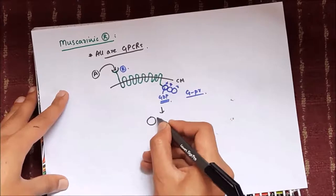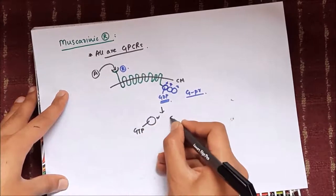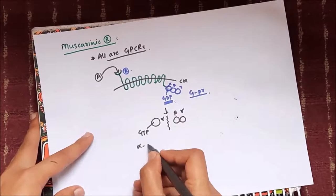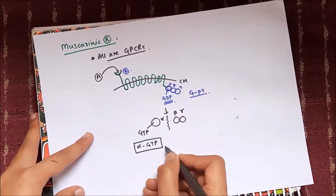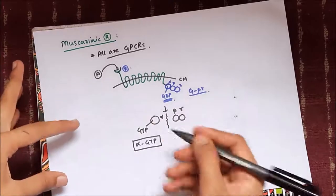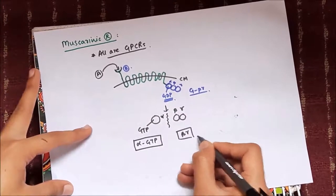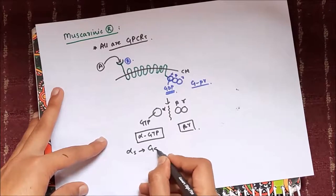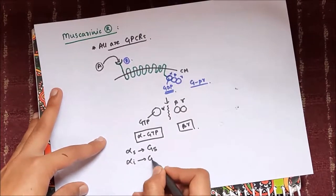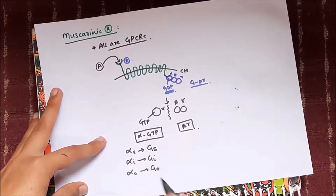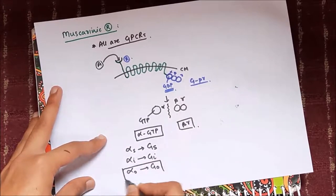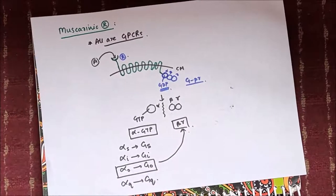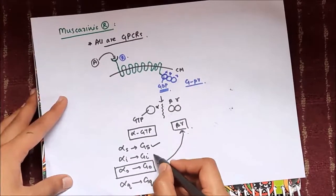Once a ligand such as acetylcholine binds to the receptor, it causes conversion of alpha-GDP to alpha-GTP. The alpha-GTP dissociates from the beta and gamma subunits, and depending on the action of the alpha subunit, the G protein coupled receptor can be classified as GS, GI, GO, or GQ.